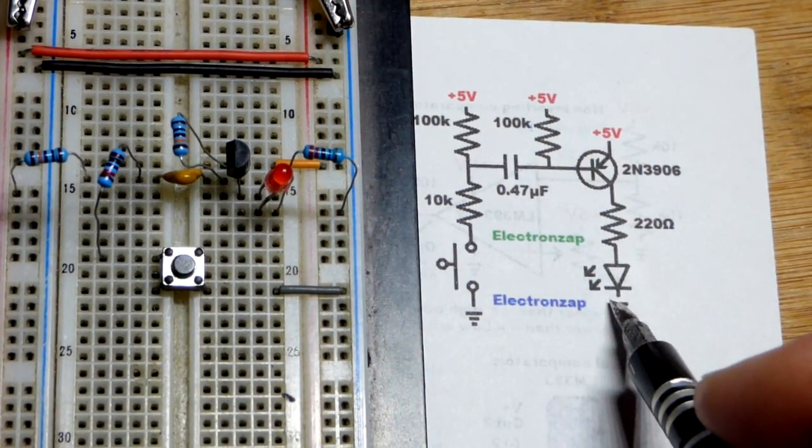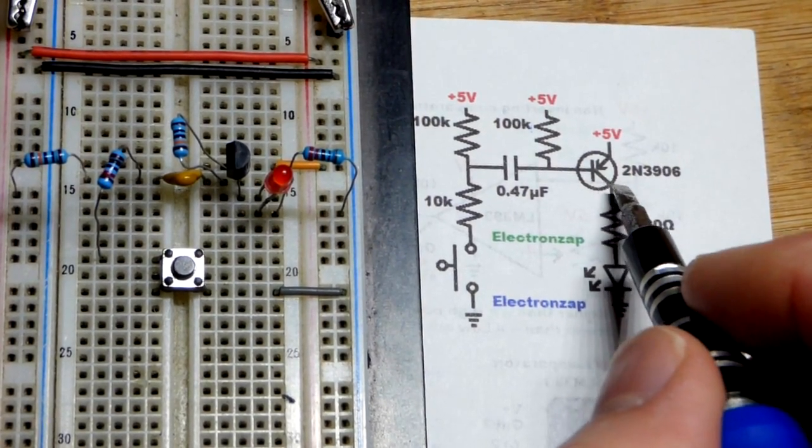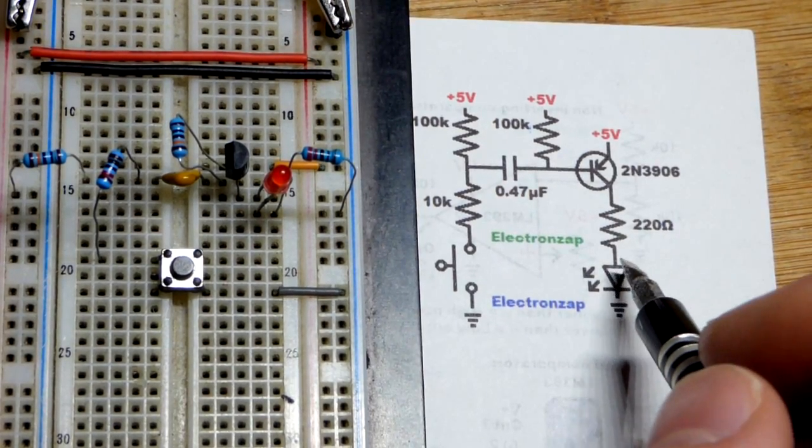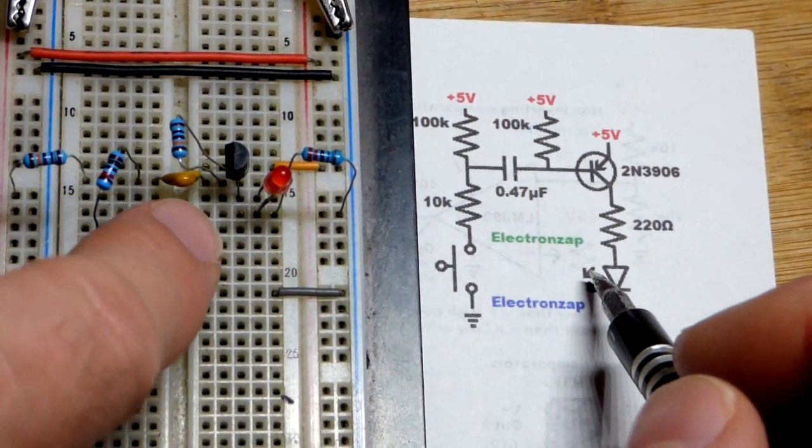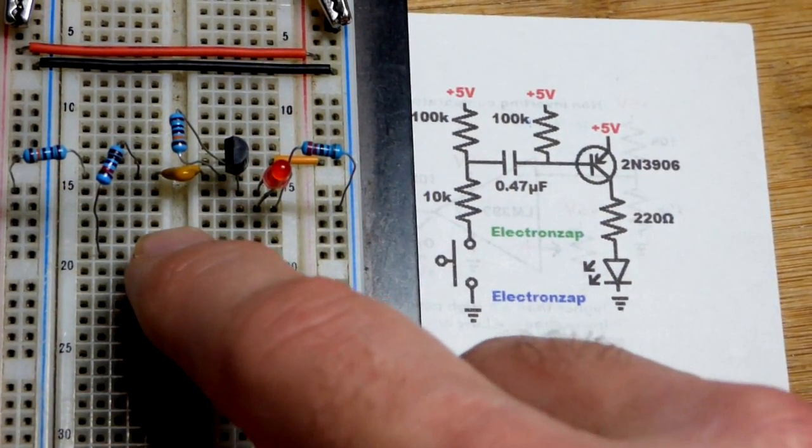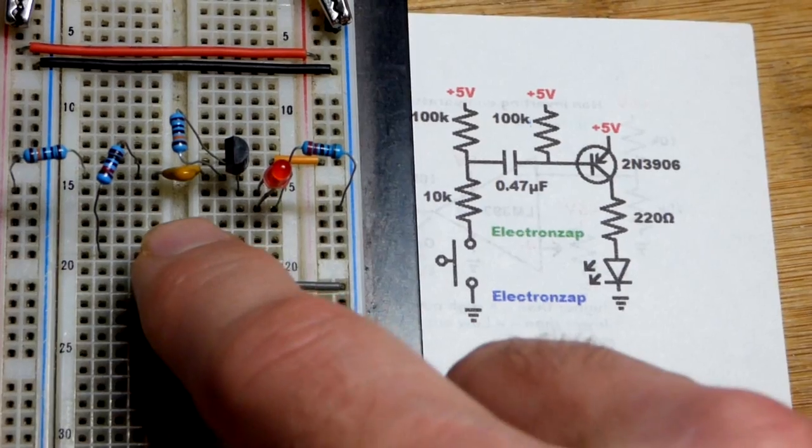Ultimately the load will set the current the majority of the time, until current slows down enough here where it kind of dims the LED. But it's so fast in this circuit that you can't tell. Again I'm getting a bunch of switch bounce. You should just see one bright flash if I get a good connection.